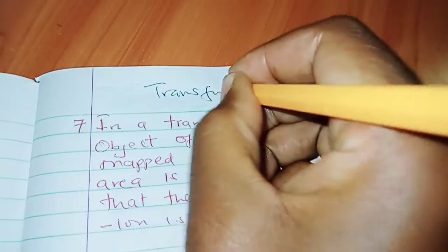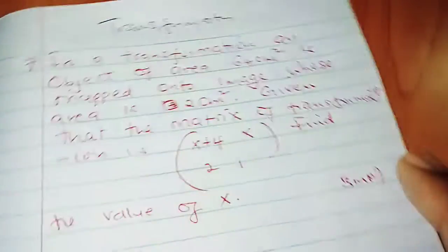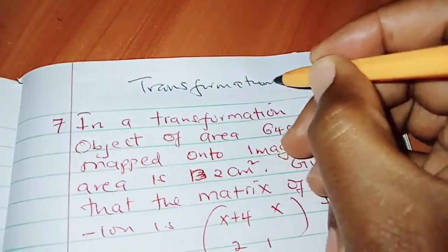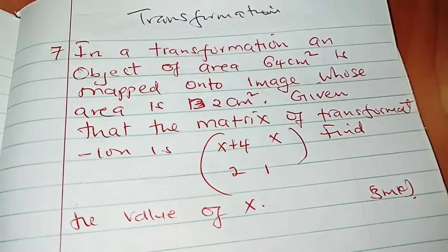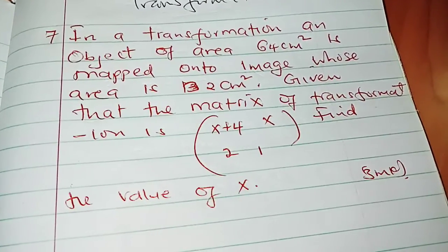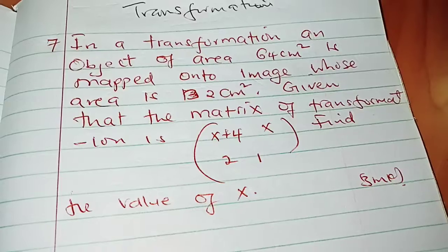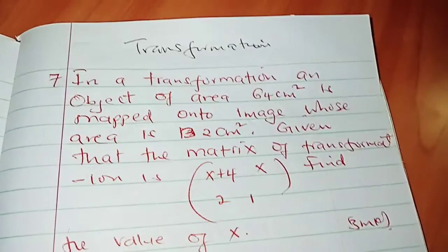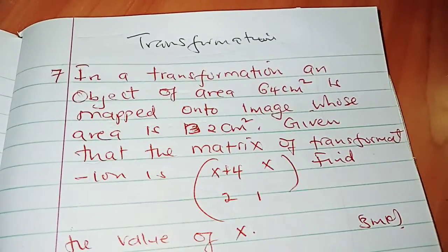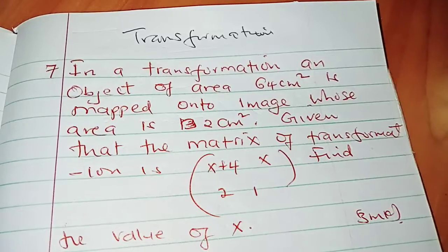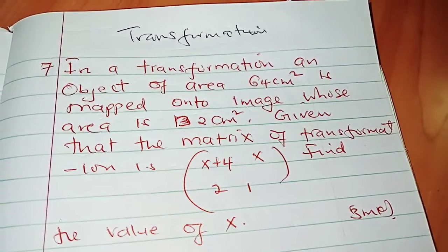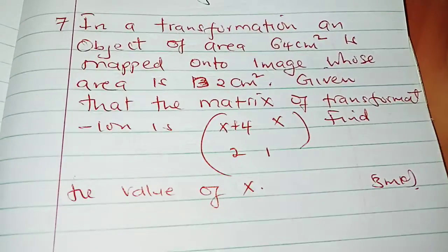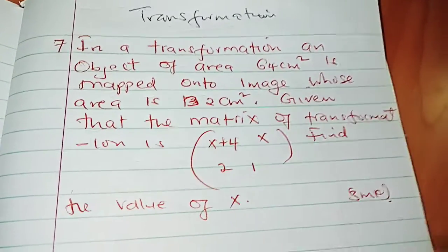Next question here, coming from the topic of transformations. This is transformation. You're told that in a transformation, an object of area 64 cm² is mapped onto image whose area is 32 cm². Given that the matrix of transformation is (x+4, 2; x, 1), find the value of x.